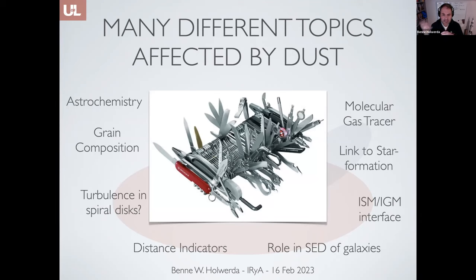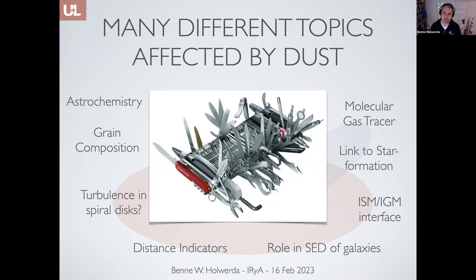If you have a scattering and absorbing medium in between, stuff looks further away than it is. There's lots of other things that happen with intergalactic dust in galaxies. It's important for astrochemistry. The grains themselves are really interesting. It's a good medium to measure turbulence in disks. It messes with distance indicators, plays a role in SEDs — spectral energy distributions of galaxies — acts like a gas tracer, and marks the interface between the interstellar and intergalactic medium. I think of dust as the absolute end-all multi-tool of astronomy.